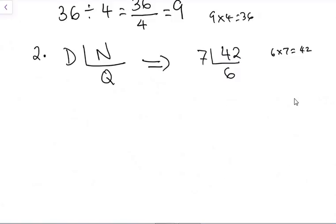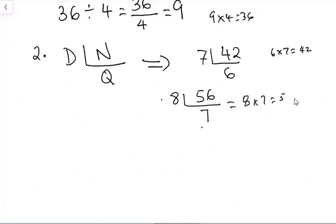The second example under this pattern: we have 56 and 8. Our numerator is 56, denominator is 8. We are asking: how many times will 8 go in 56? That would be 7. And 8 times 7 gives us 56, so we have 7 written as the answer.